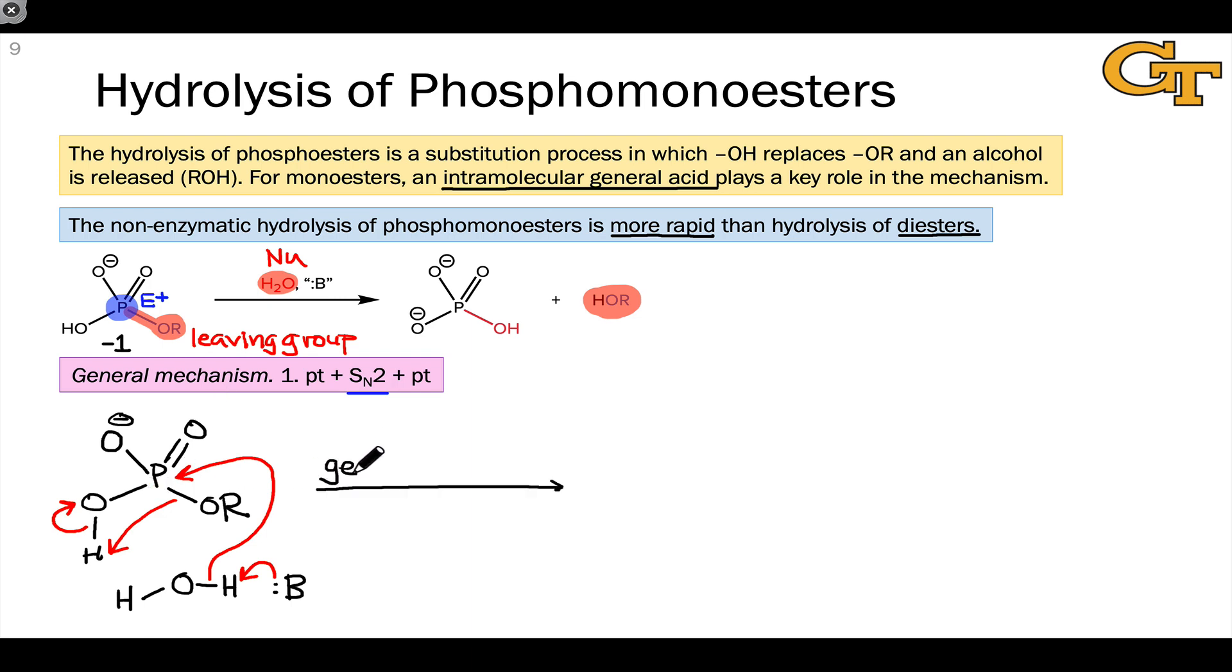On the whole, this is general acid and general base catalyzed SN2. And it leads directly to the products of the hydrolysis reaction, which I'll just draw again. We now have an O- where the OH was before. We have the O- that was present in the original phosphomonoester. We have the P=O double bond. And now we have a new OH group linked to the phosphorus, which came from water. The other byproduct of this reaction is the alcohol, H-O-R, of the alkoxy group that was present in the original phosphomonoester.